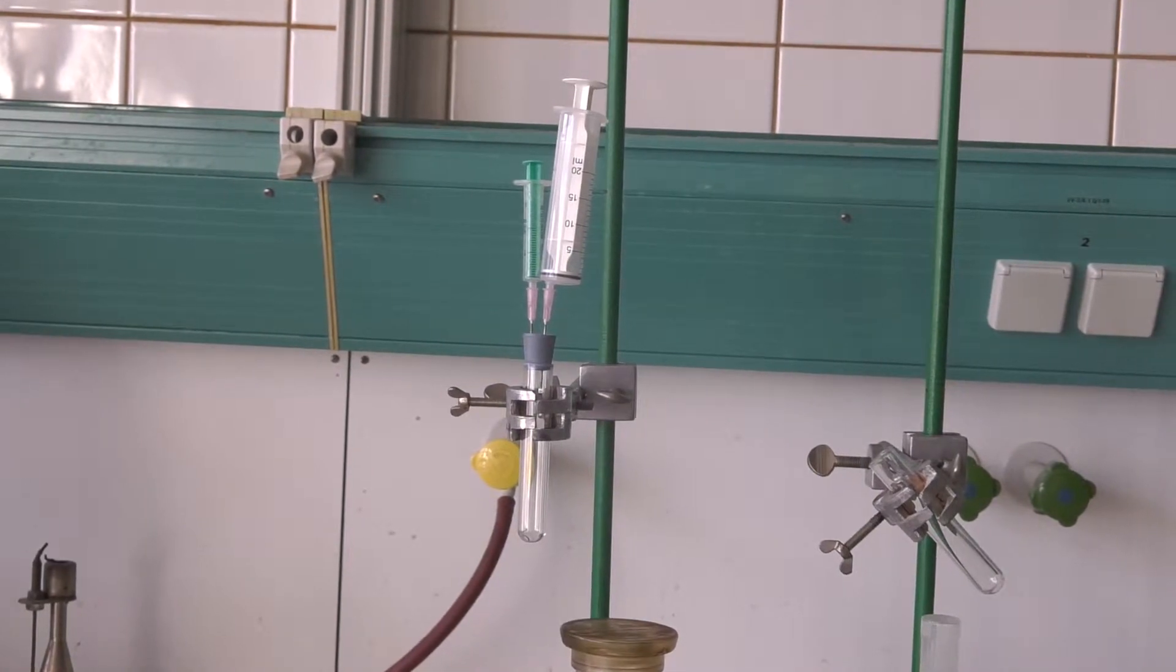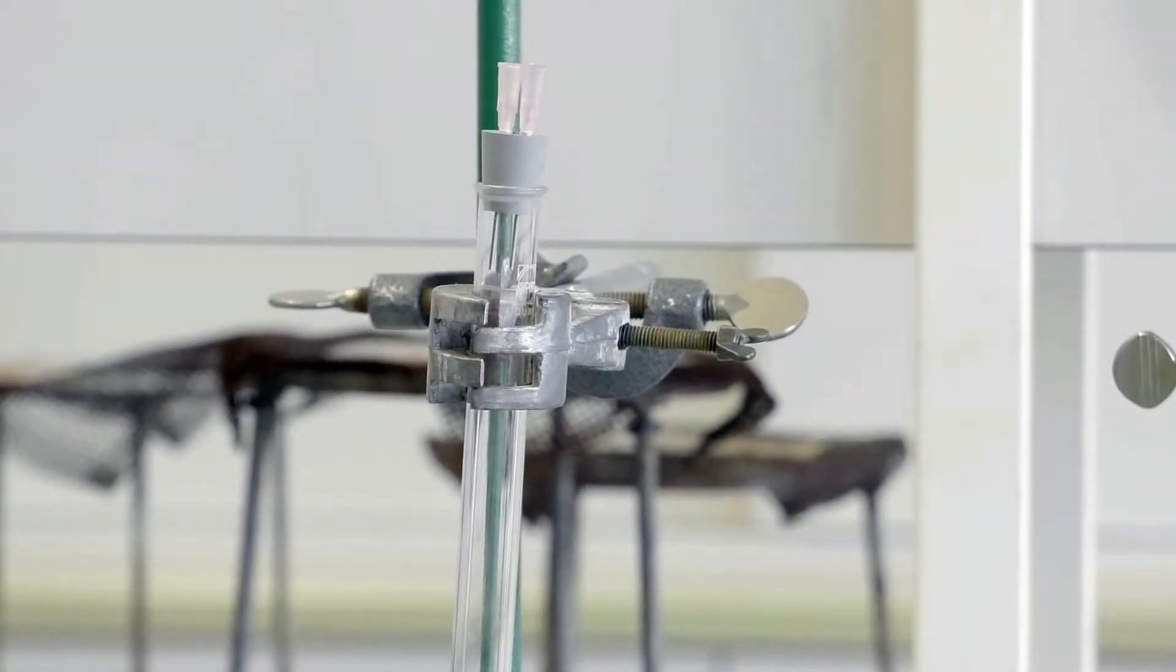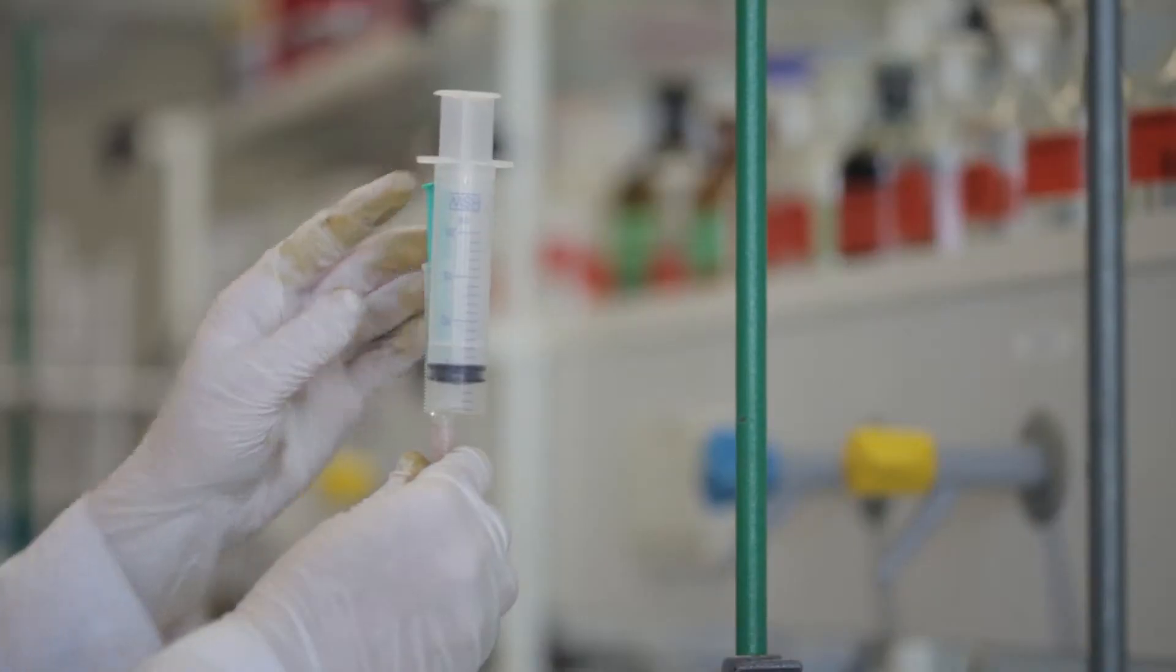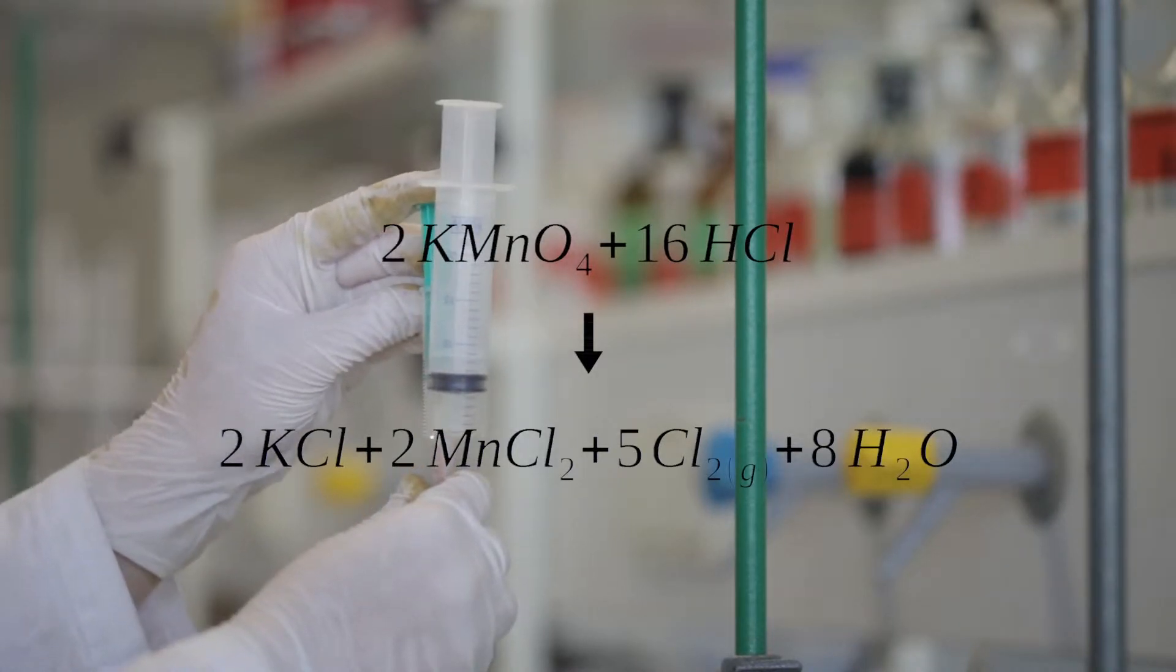One of the test tubes will be filled with potassium permanganate. Attached to the test tube is a plug with two cannulas. One of the cannulas includes concentrated hydrochloric acid.